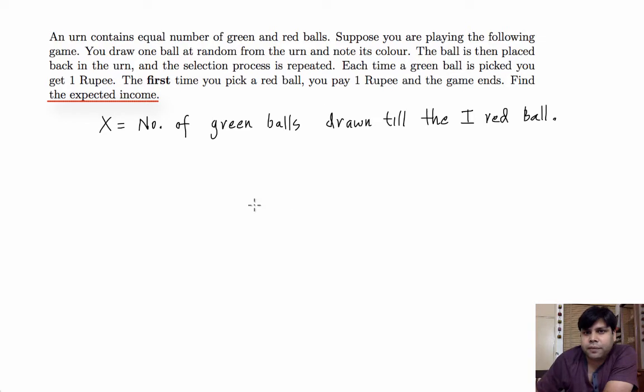And we are interested in finding what is the expected income. So expected income is nothing but expectation of number of green balls minus 1, because we will pick one red ball for sure at some stage.